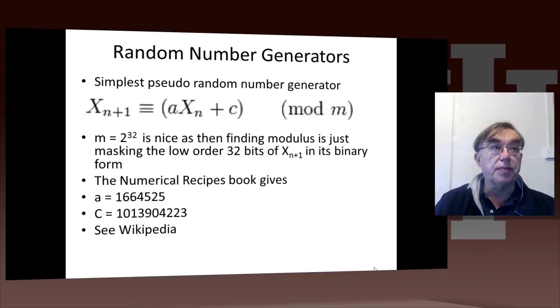This comes from the Wikipedia article on random number generators. And the simplest one, which is what I used to code up when using C, was that you form a sequence of numbers just by taking the current random number, multiplying it by an integer A, adding a constant C, these are all integers, and then taking the modulus with respect to a certain value. If you want to write simple code, 2 to the 32 is a nice modulus, because that says if you take 32-bit integers, multiply them together, you get a 64-bit integer. And then modulus 2 to the 32 just means you take the low-order 32 bits.